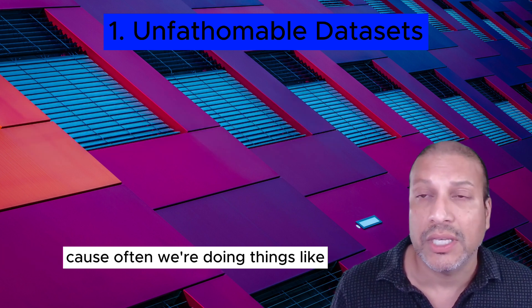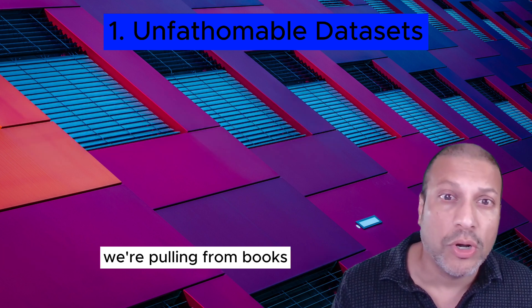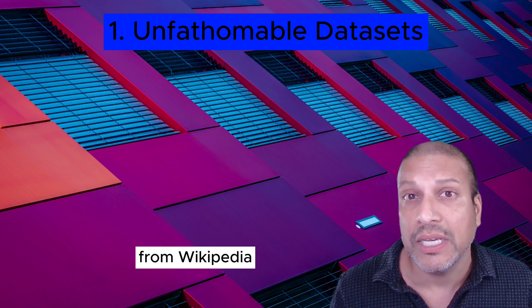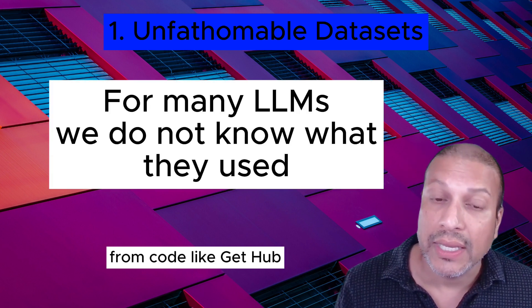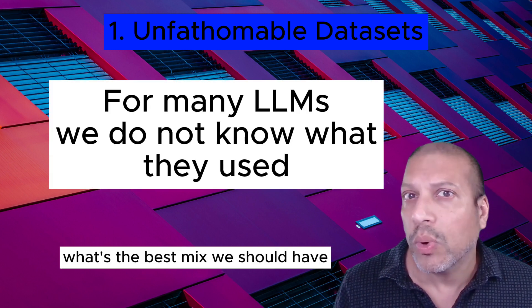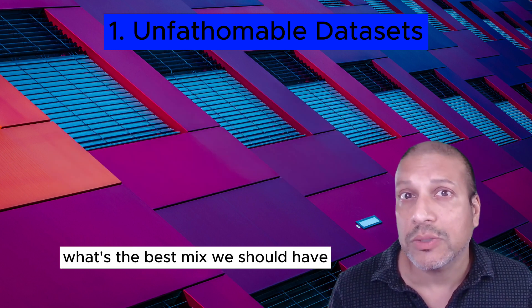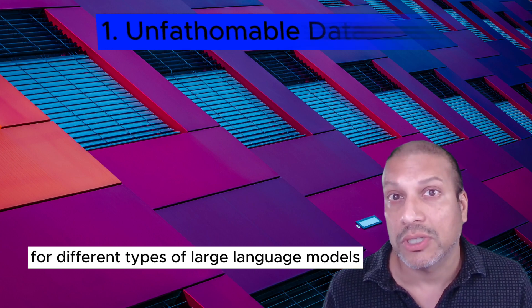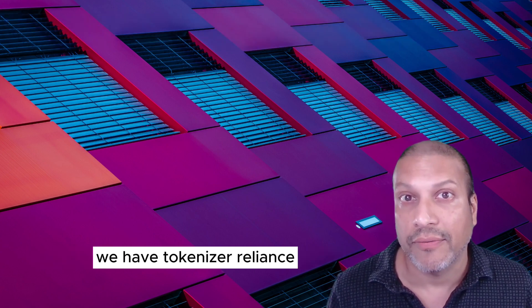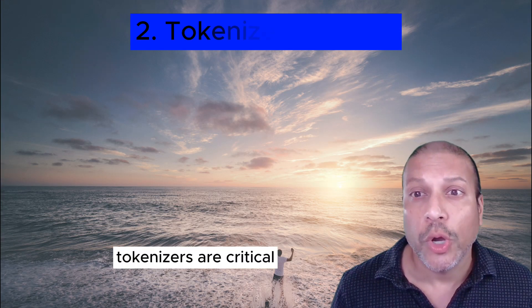Often we're pulling from books, from Wikipedia, from code like GitHub. What's the best mix we should have for different types of large language models? Tokenizer reliance is the next challenge.